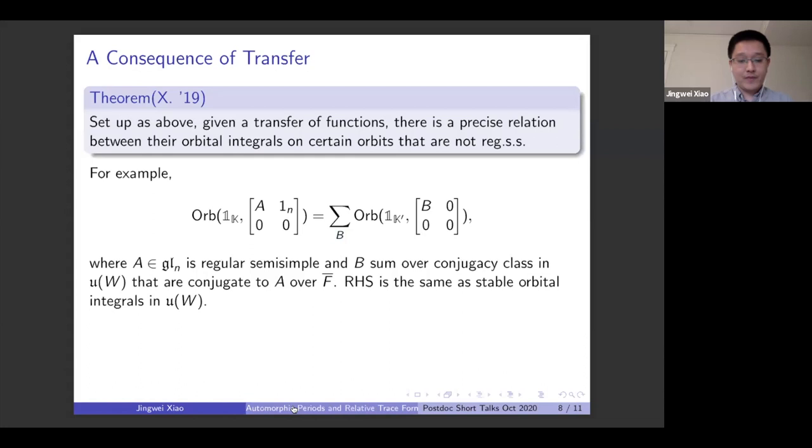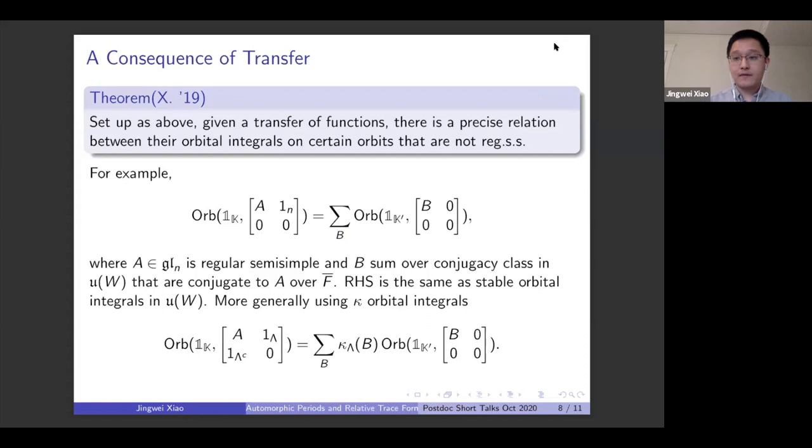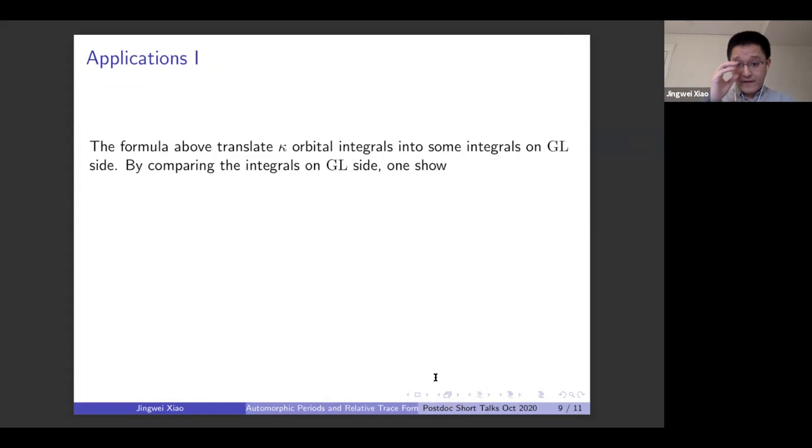You can do summation over the stable conjugacy classes. And first of all, you can do this more generally. You can include some characters of the component groups with some other orbits on the GL side. Other questions?